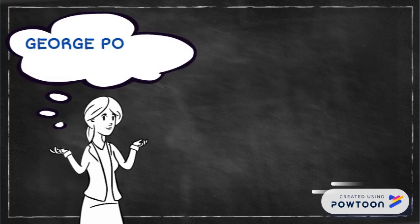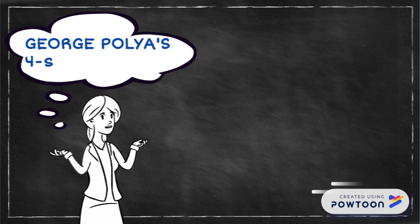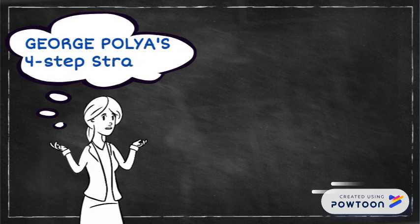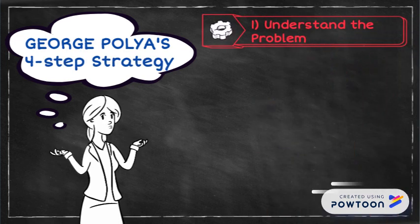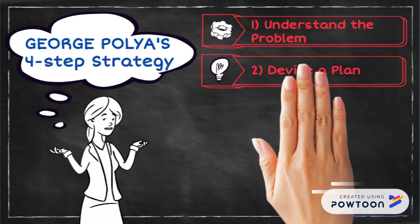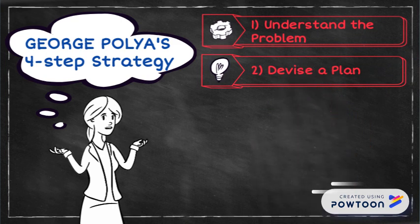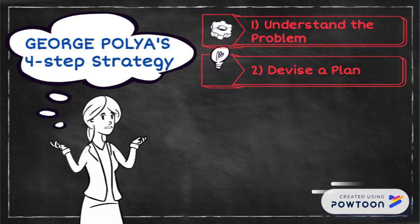Today, we are going to solve a problem using George Polya's four-step strategy. First, we have to understand the problem. Second, devise a plan. Third, carry out the plan. And fourth, review the solution.